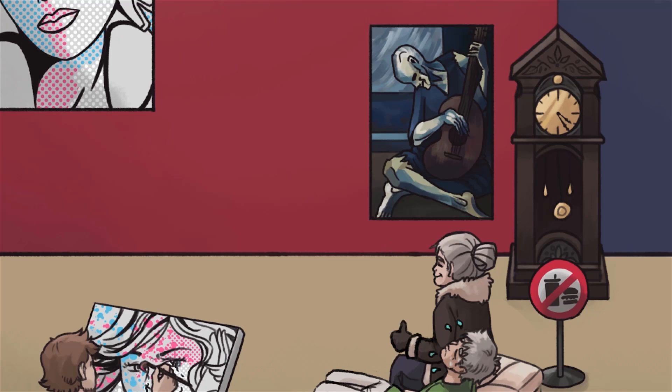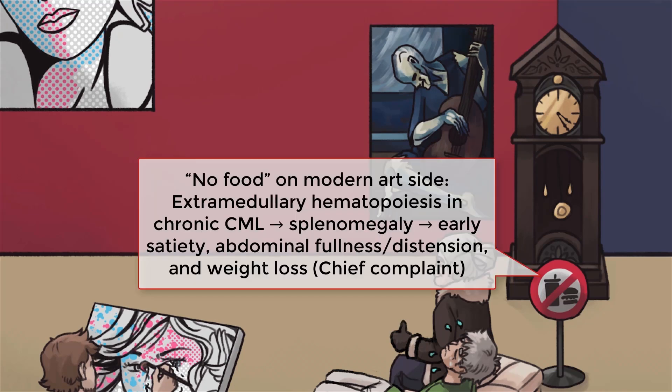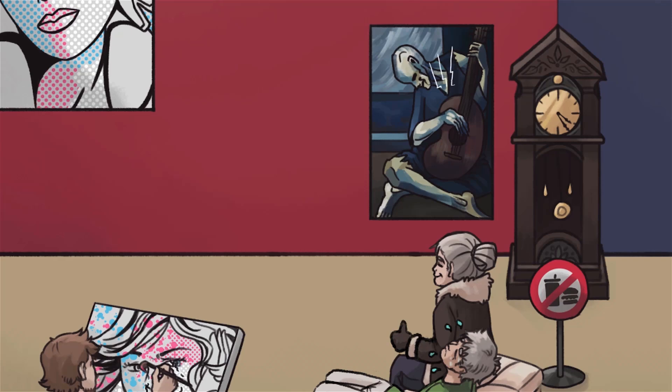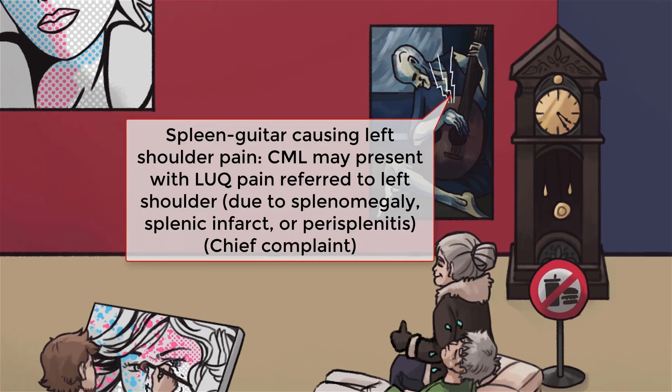CML typically involves splenomegaly due to extramedullary hematopoiesis — hence the large splenic guitar in the painting. If the enlarged spleen compresses the stomach, patients may experience early satiety and weight loss. Patients often describe feeling full prematurely despite a good appetite. Splenomegaly can also cause abdominal fullness and distension. Patients may report left upper quadrant pain or discomfort, sometimes referred to the left shoulder. In some cases, splenomegaly may even cause splenic infarct due to insufficient blood supply, and inflammation of the splenic capsule — perisplenitis — can also occur.